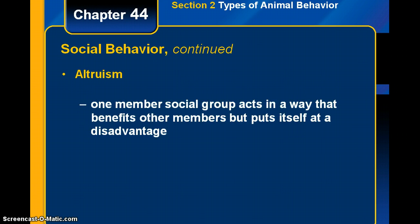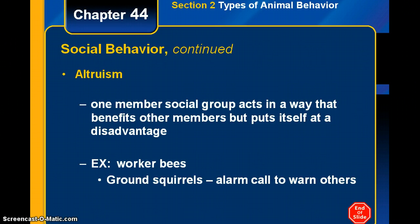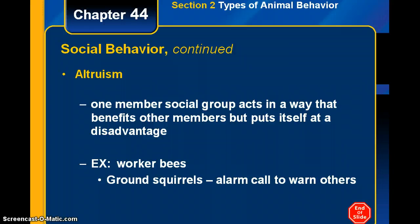Altruism is a type of behavior that goes along with social behavior — when one member of the social group acts in a way that benefits others but puts itself at a disadvantage. For example, worker bees do all the work and sometimes sacrifice themselves. Ground squirrels may go out, send an alarm call to warn others, and get killed in the process.